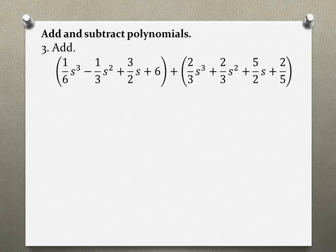Add and subtract polynomials, problem number 3. We have (1/6)s³ - (1/3)s² + (3/2)s + 6, added to (2/3)s³ + (2/3)s² + (5/2)s + 2/5.